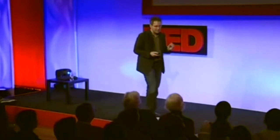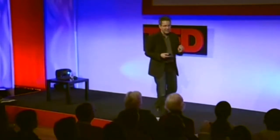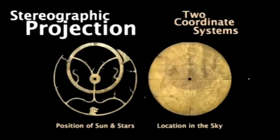The real genius of the astrolabe is not just the projection. The real genius is that it brings together two coordinate systems so they fit perfectly: the position of the sun, moon, and planets on the movable rete, and their location on the sky as seen from a certain latitude on the back plate.